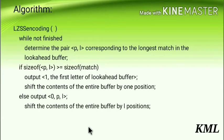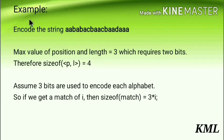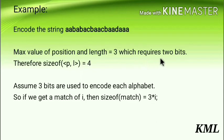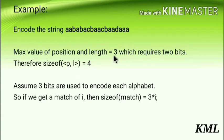Let's solve an example: encode the string ABABAC BAA CBAADEEE using the LZSS method. It is given that the maximum value of position and length is 3, which requires 2 bits. Using 2 bits you can generate 4 values: 00, 01, 10, 11. Those 4 values are enough to accommodate 3, so the size of P,L is 4 — that is the maximum number of values you can generate using that many bits.